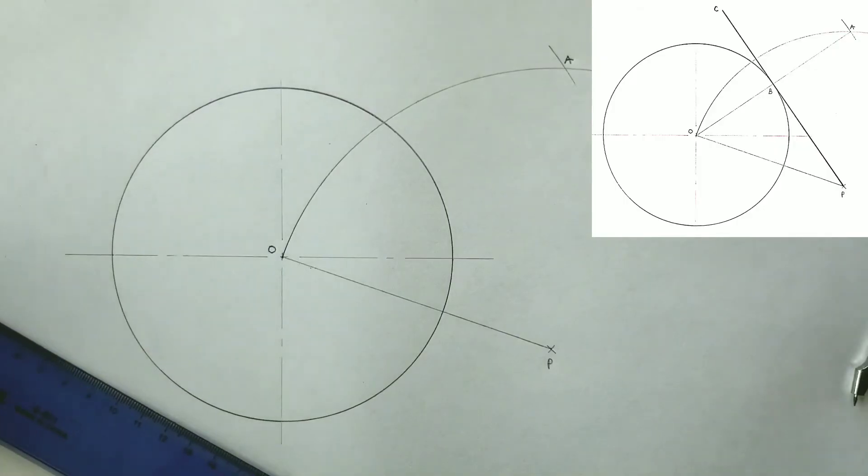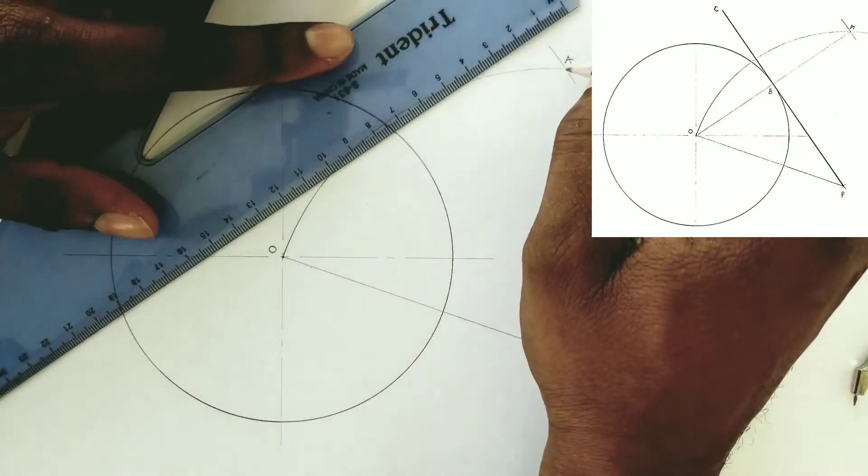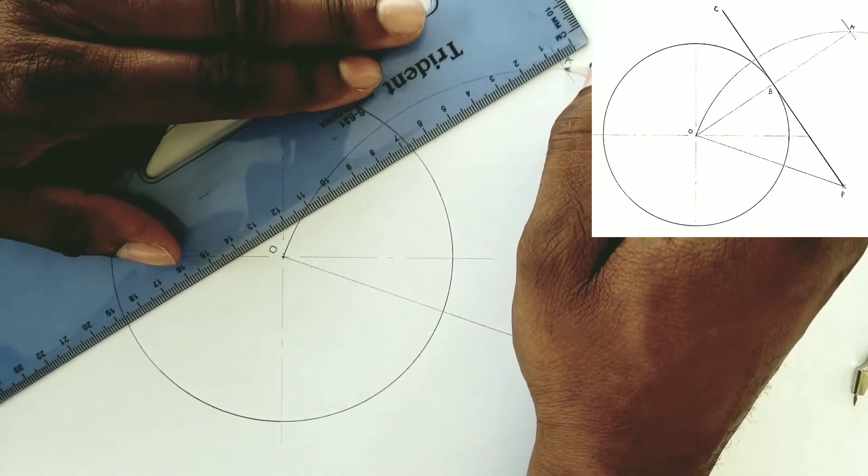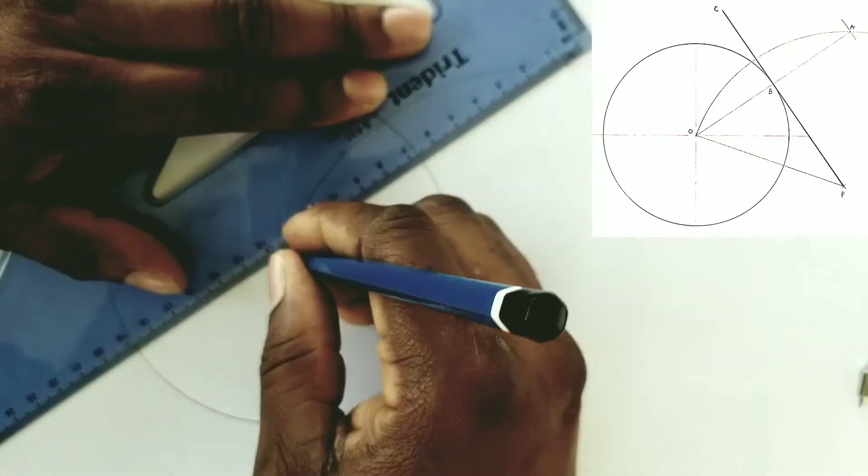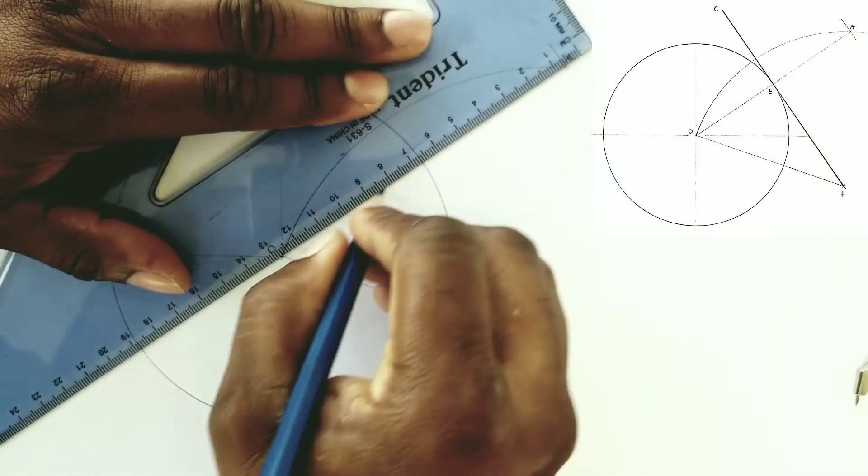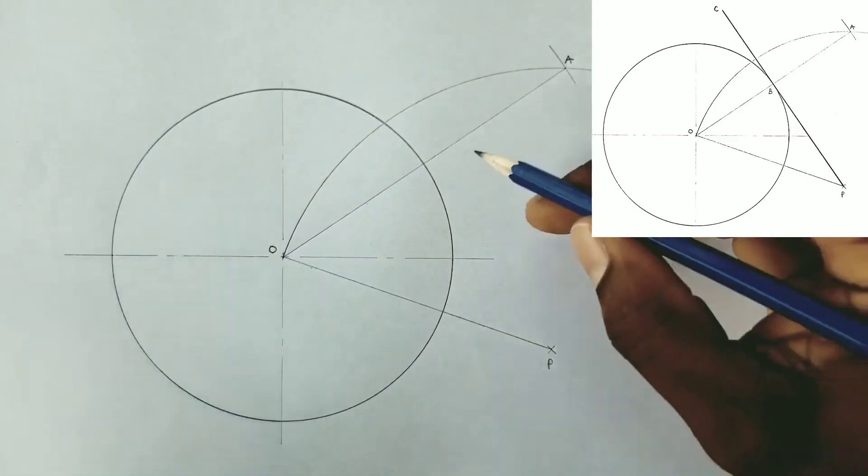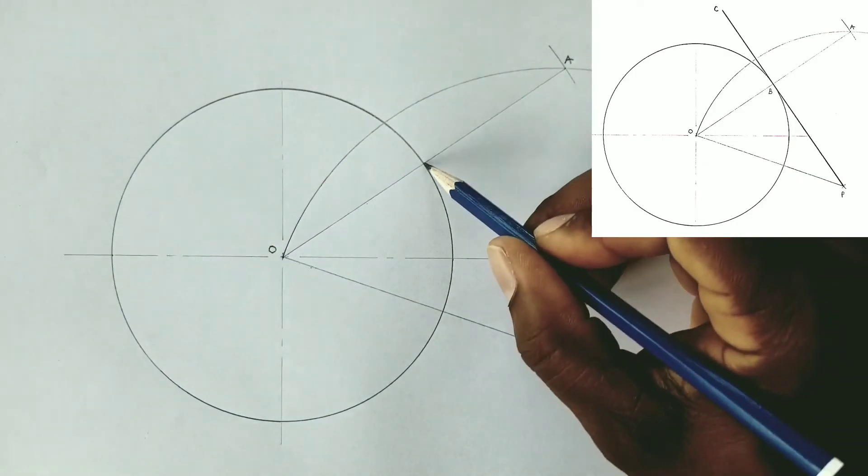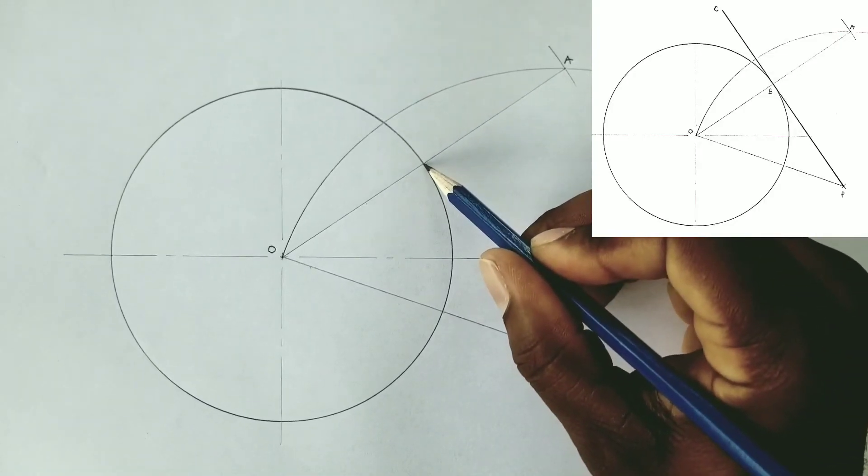From point A, we will now draw a line to the center of our circle O. This line intersected the circumference of our circle and this point will be called or labeled B.